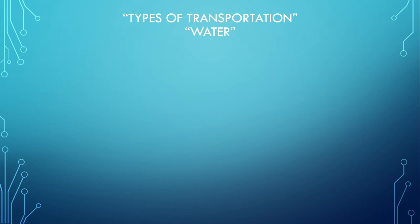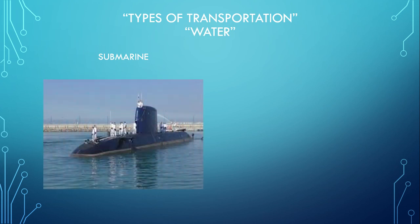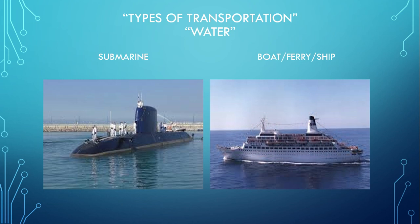Types of transportation in water — what are those? This is the image of a submarine. That is a submarine. Next, boat, ferry, or ship. This is a boat. Again: boat, ferry, ship, and submarine.